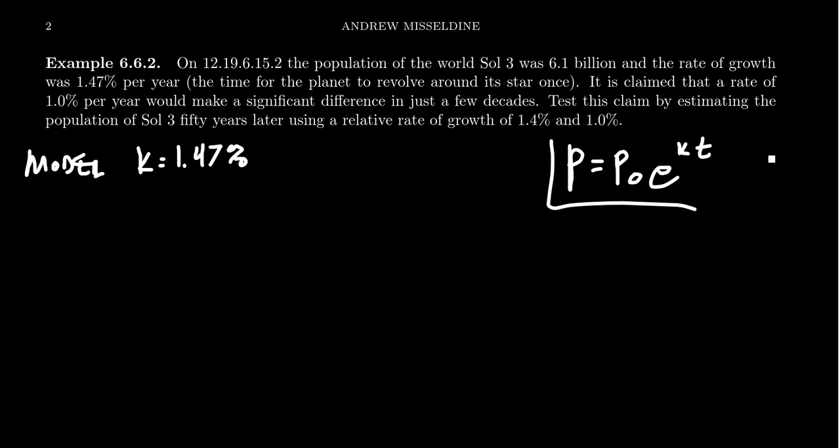And so then we see that the growth rate is going to change for both of these models. The initial population is still going to be 6.1 billion. And I'm just going to keep it at 6.1, knowing that the answer will be multiplied by billion in the end. So for the first model, the current growth rate, the population is going to be 6.1 E to the 0.0147 times T. So that's the first growth model.